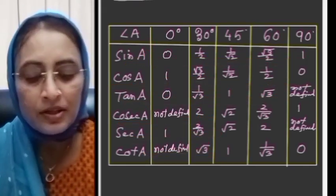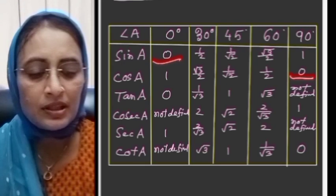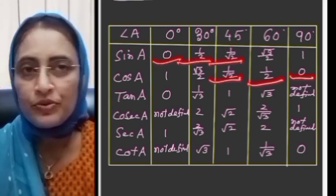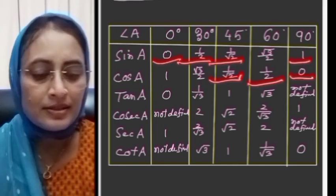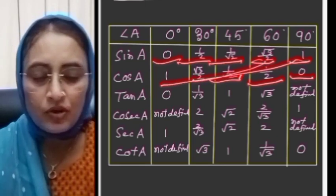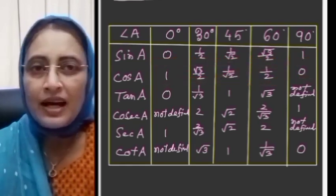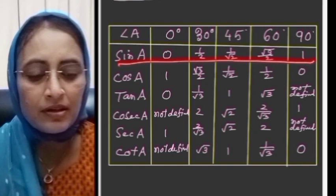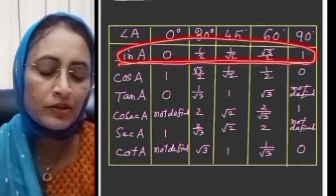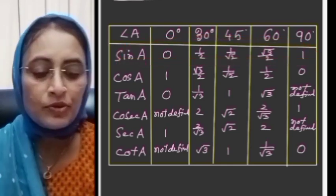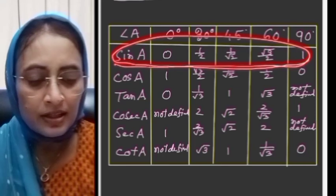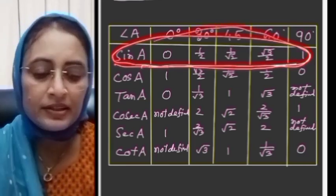From the table: sin 0 = 0, sin 30 = 1/2, sin 45 = 1/√2, sin 60 = √3/2, sin 90 = 1. Note that sin 90 equals cos 0 and sin 60 equals cos 30. I will share a trick for learning this first line in the description box — you will get the link from there.